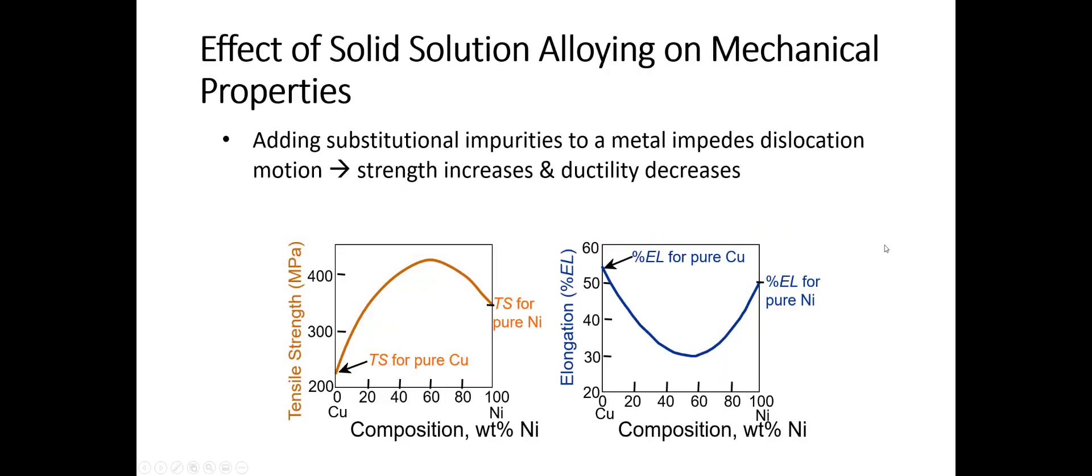I want to talk a little bit about the effect of solid solution alloying on mechanical properties. If you remember from class, we talked about what do we want to do to make a material stronger? We want to impede dislocation motion. It turns out that adding substitutional impurities to a metal impedes dislocation motion. So we expect the strength to increase and correspondingly the ductility to decrease.